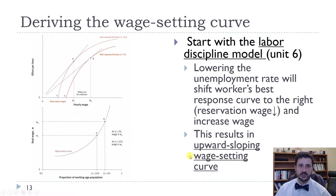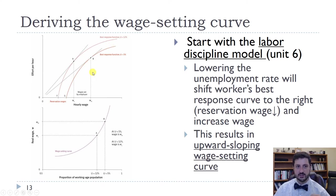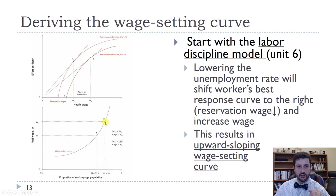We get there from the best response function: it shifts when the unemployment rate changes — shifting right for a lower unemployment rate and left for a higher unemployment rate, determining the wage that will be paid. At a higher unemployment rate, point A in the best response function corresponds to point A on the wage setting curve. Point B in the shifted best response function with a lower unemployment rate corresponds to point B on the wage setting curve.